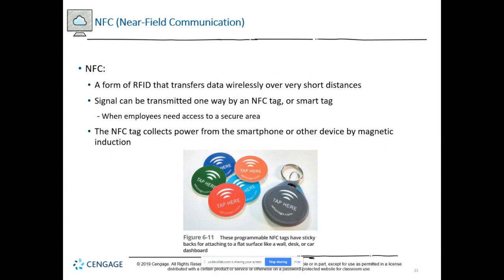NFC — near field communication — is like RFID but limited to 10 centimeters or less and can only hold about 32 kilobits of information. The key difference is that it's peer-to-peer instead of one-way like scanning with RFID. That's a lot of information you may not want others to access.